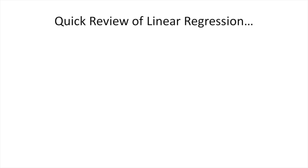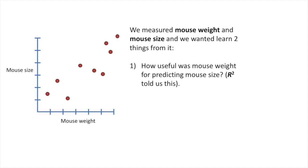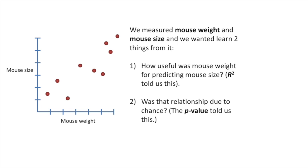Let's start with a super quick review of linear regression. Last time, we measured mouse weight and mouse size, and we wanted to learn two things from it. We wanted to learn how useful mouse weight was for predicting mouse size — R-squared told us this — and we wanted to know if the relationship was due to chance. The p-value told us this.